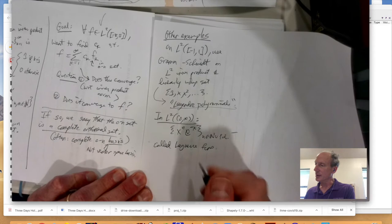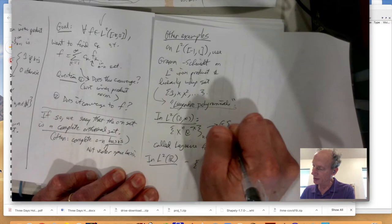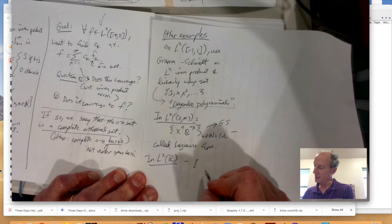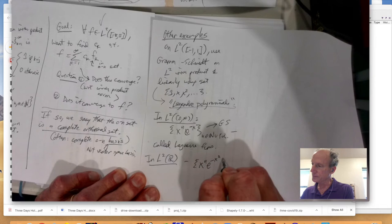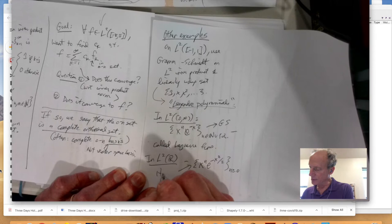And then in L2 of R, you can look at the set of, well, again, you have to use Graham-Schmidt to kind of get the complicated combinations of these things, so that you get them to be L2 orthogonal. And then if you look at in L2 of R functions of this form, these are called the Hermite functions.